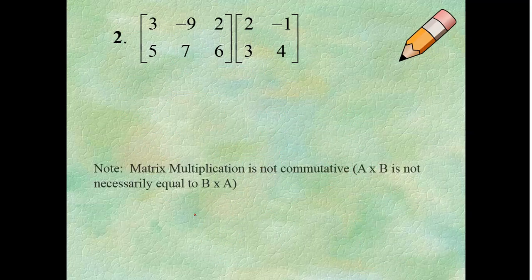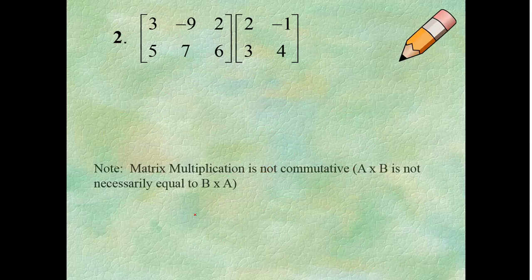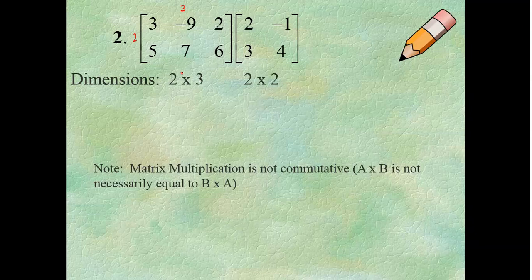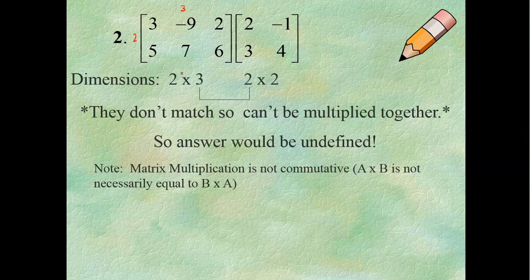Now, what happens? Notice, I flipped my matrices around. Let's figure this out. So, this is a 2 by 3, and the other one is a 2 by 2. Notice, though, those aren't the same. So, they're not matching. That means I can't multiply these together. So, my answer would be undefined.